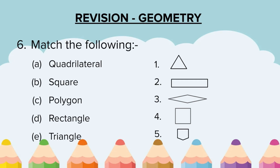Question 6: Match the following — quadrilateral, square, polygon, rectangle, triangle. Various figures are given. You have to be careful. You might find three figures corresponding to quadrilateral, but you have to see the other options and choose the correct answer.